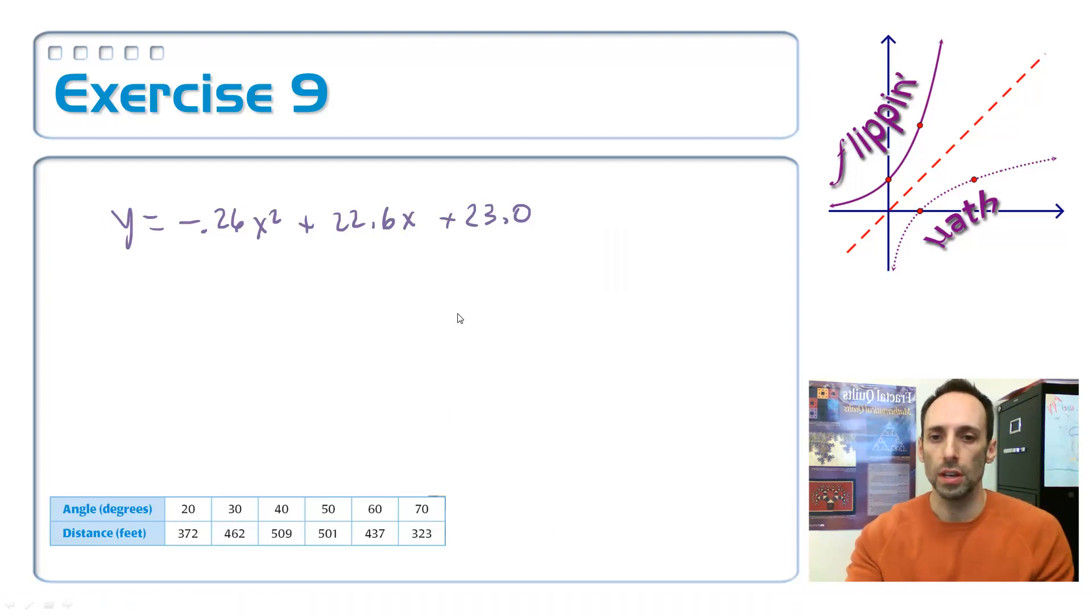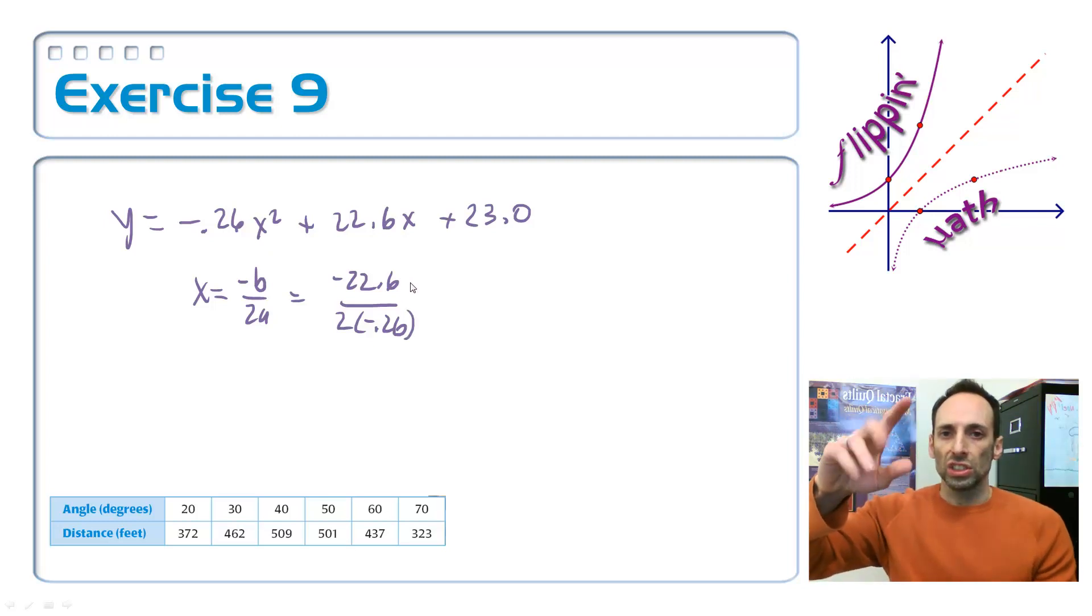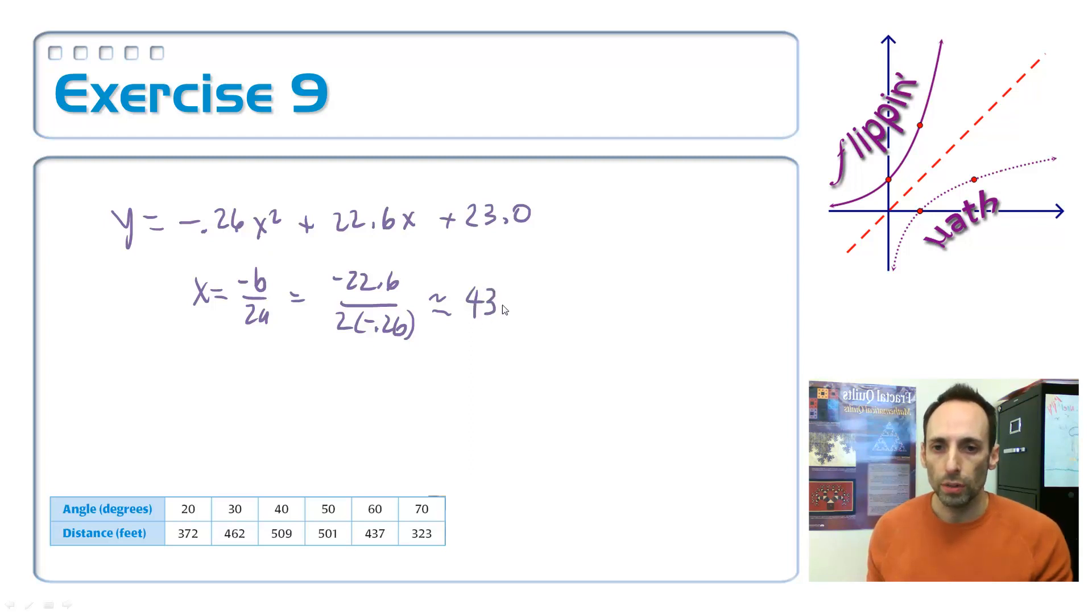Well, when our equation is in standard form, we could just use this formula. X is equal to negative B over 2A. So, my B is 22.6 divided by 2 times negative 0.26 numbers calculator. And when I do this, I get about 43 degrees. And if I look right in here, I could see 43 degrees. That's where the maximum is occurring. And that does make sense with the table of values.